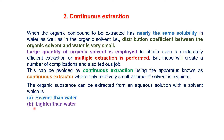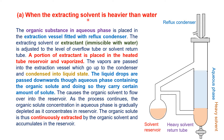We will study two cases: when the organic solvent is heavier than water, and when it is lighter than water. In the first case, the organic substance in the aqueous phase is placed in an extraction vessel fitted with a reflux condenser. The other solvent, immiscible with the aqueous phase, is also placed in the extraction vessel. As it is heavier, it moves downward, and the level of this heavier solvent is adjusted to the overflow tube or solvent return tube.